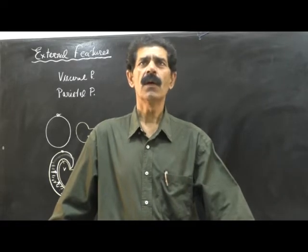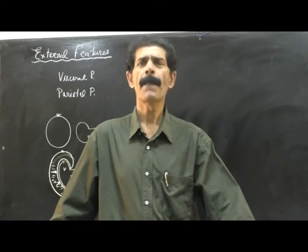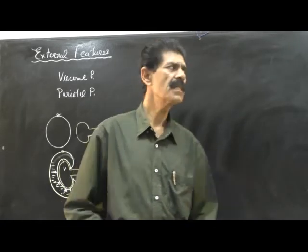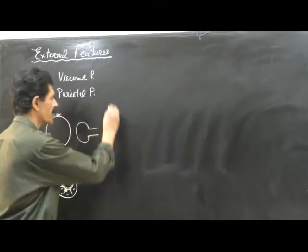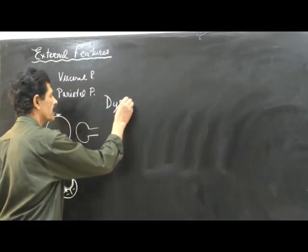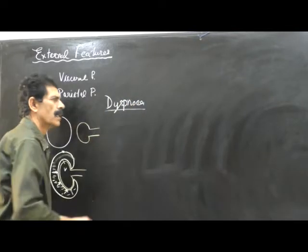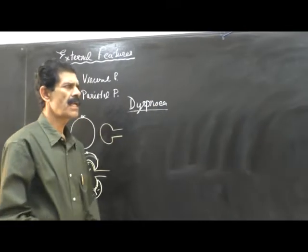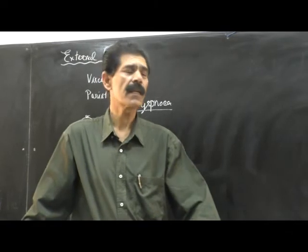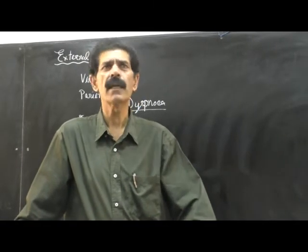If the effusion is in the lungs, it causes dyspnea, meaning difficulty in respiration. In pericardial effusion, it leads to decreased cardiac output.